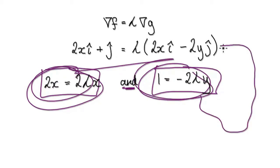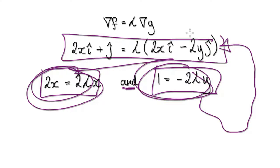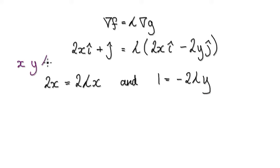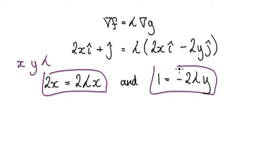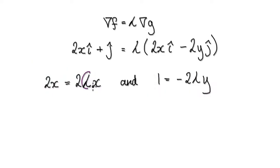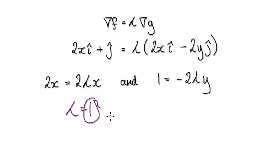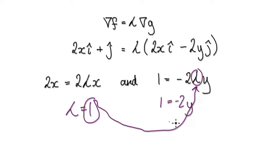If you satisfy these two equations you will automatically satisfy the overall condition. At this stage, your job is to find x, y, and lambda such that these two equations are true. You can clearly see that lambda must equal 1, because we have 2x on both sides. So lambda equals 1.